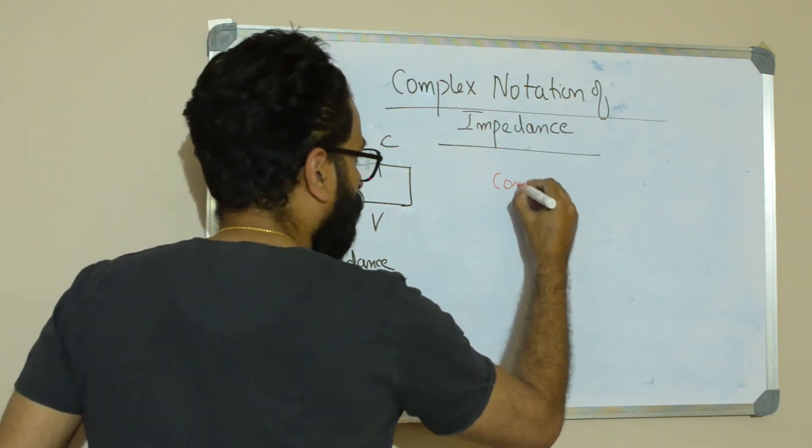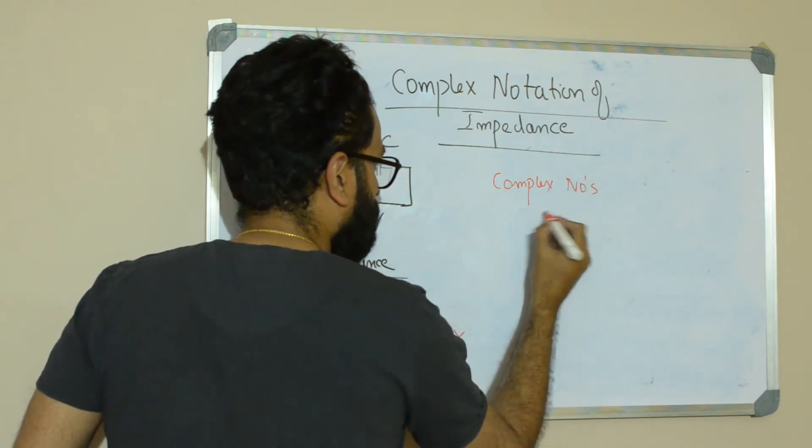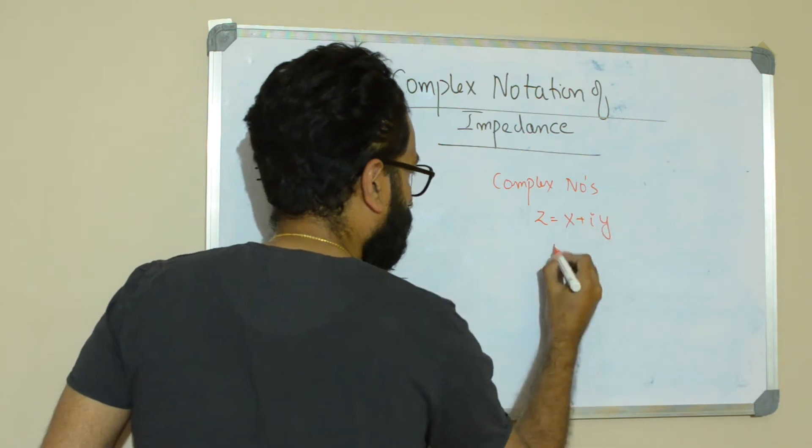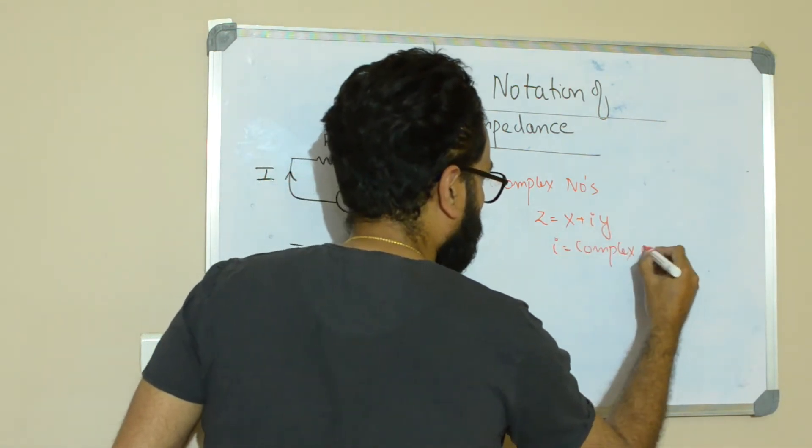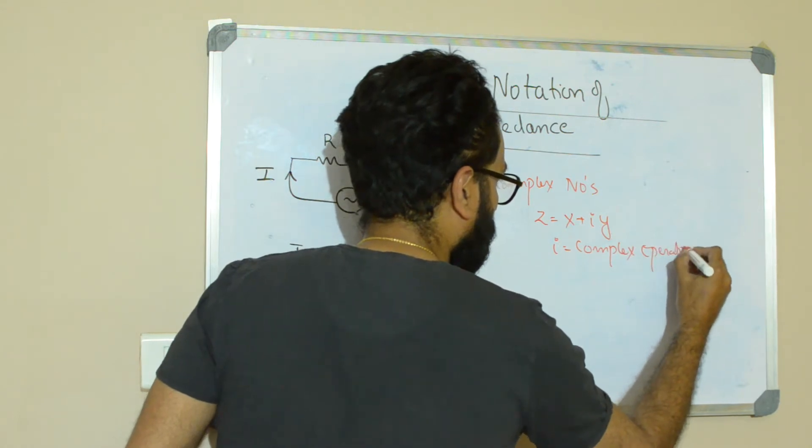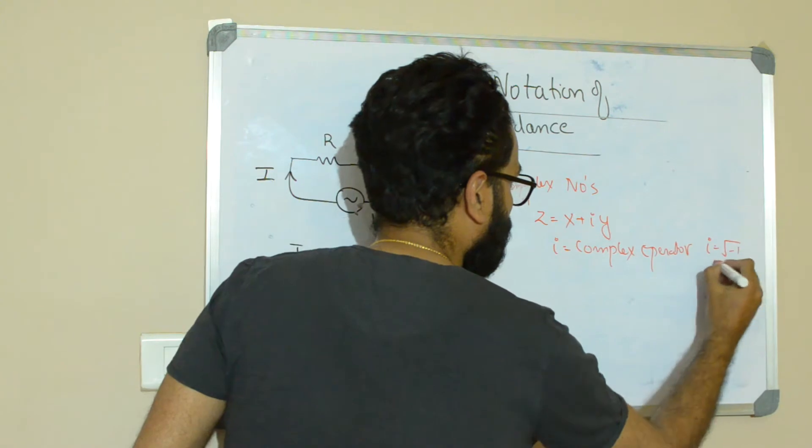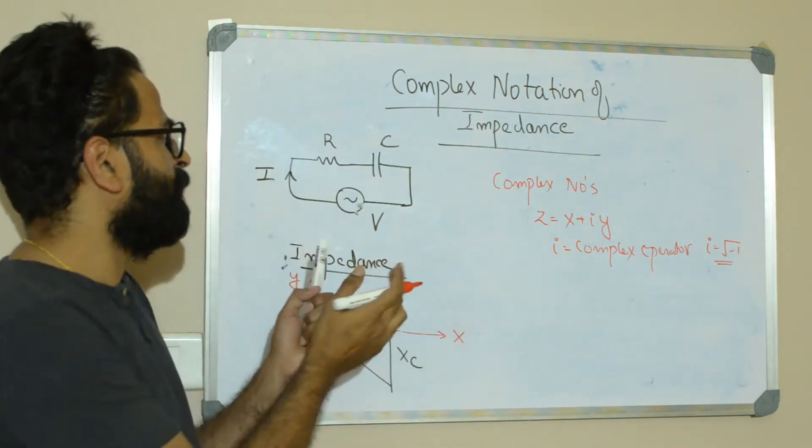Now in mathematics we have already seen the complex number. Usually we write complex numbers as something like z is equal to x plus I times y, where I is equal to the complex operator, and the value of I is square root of minus 1. The same notation we are going to use even in electrical engineering.